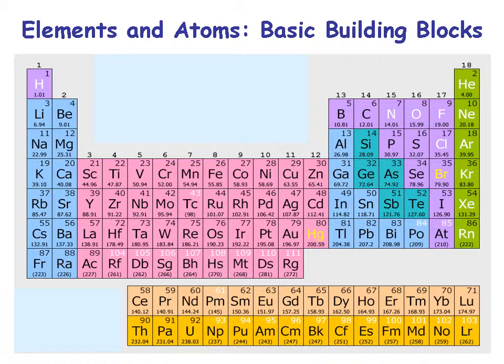Here we have a periodic table of the elements. Silicon is element number 14. Aluminum is element number 13. Oxygen is element 8. Iron — that's a Latin lettering, ferrous — is number 26. Calcium is number 20. Magnesium is number 12. Sodium, again a Latin lettering, is number 11. And potassium is number 19.